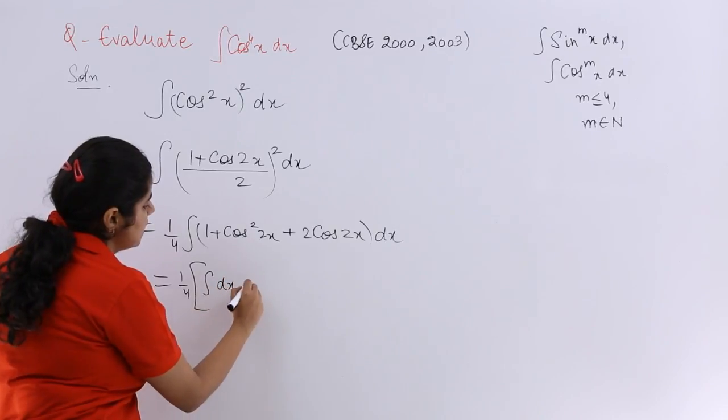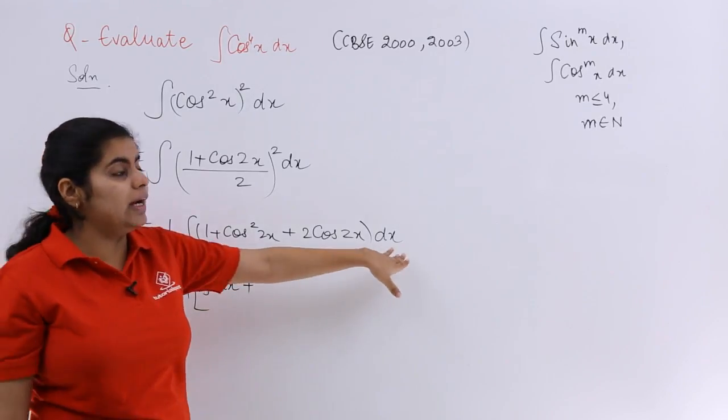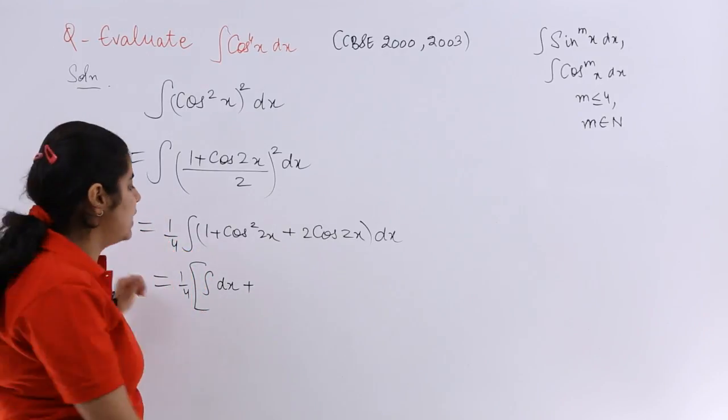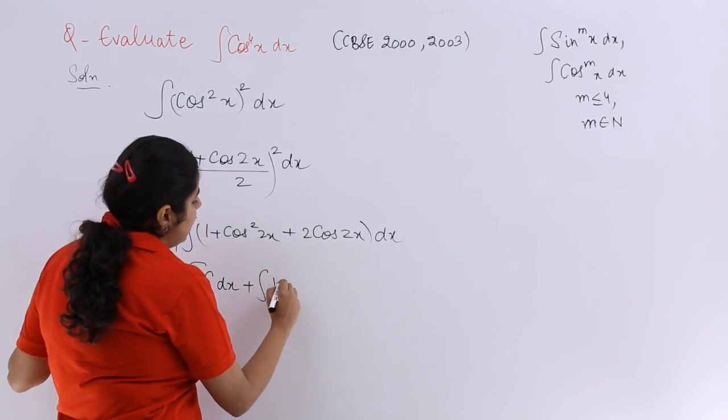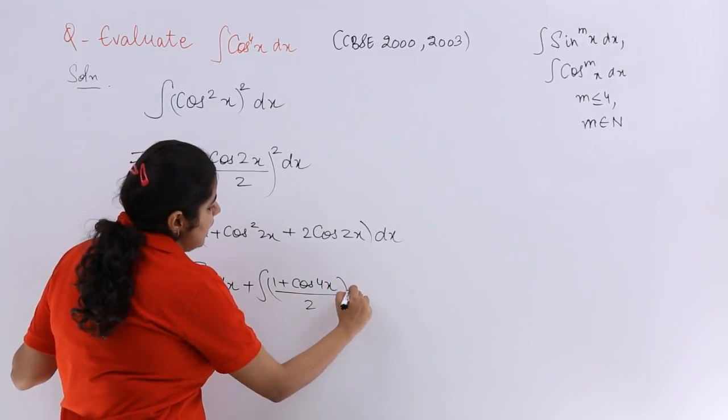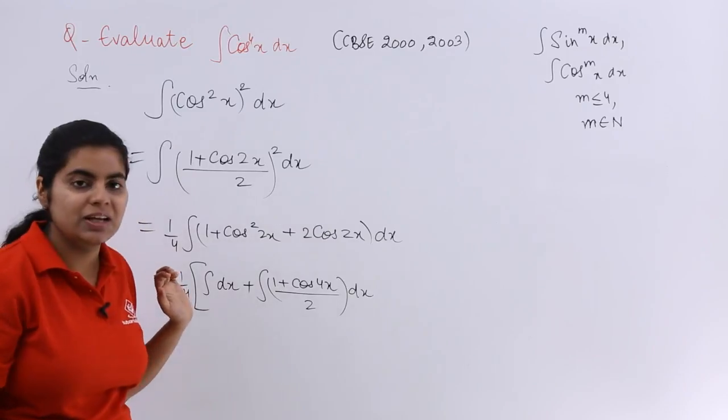Then I have integral 1 dx. So it is nothing but dx plus integral cos square 2x dx. Again, I have to use the formula directly. I cannot evaluate. So it is nothing but 1 plus cos 2 theta whole over 2 and I have dx.